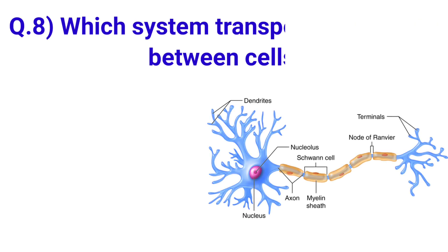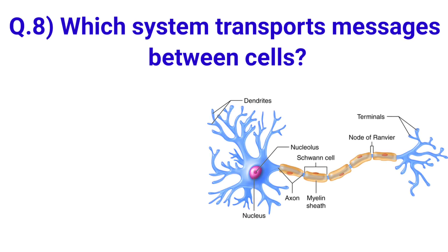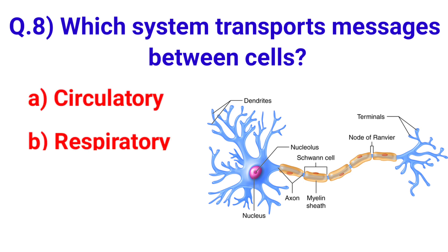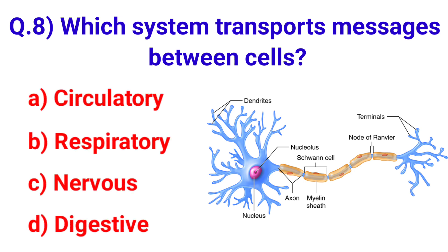Next question: Which system transports messages between cells? Your options are: A. Circulatory, B. Respiratory, C. Nervous, D. Digestive.